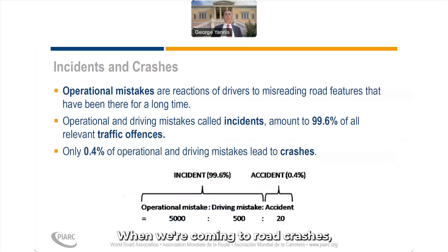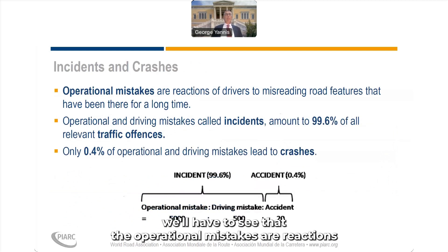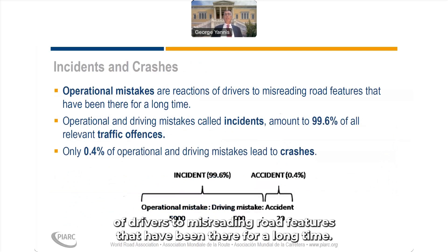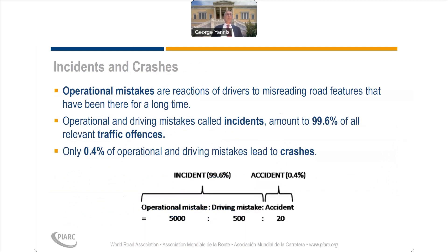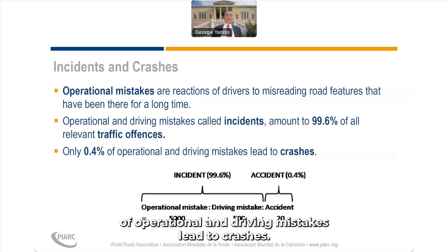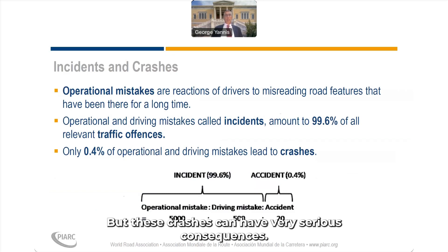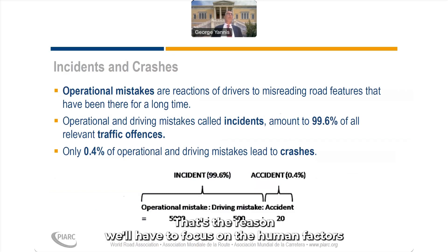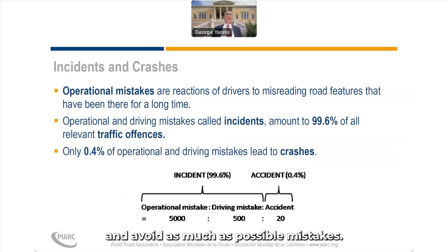When we come to road crashes, we have to see that operational mistakes are reactions of drivers to misreading road features that have been there for a long time. Operational and driving mistakes, called incidents, amount to something like 99% of all relevant traffic offenses. However, only 0.4% of operational and driving mistakes lead to crashes, but these crashes can have very serious consequences. That's why we have to focus on human factors and avoid as many mistakes as possible.